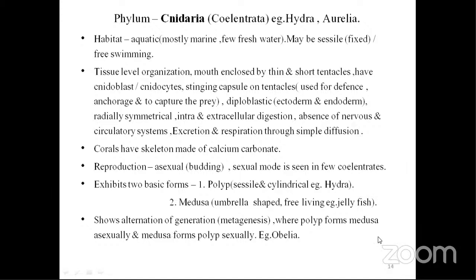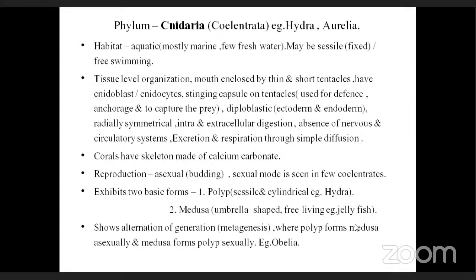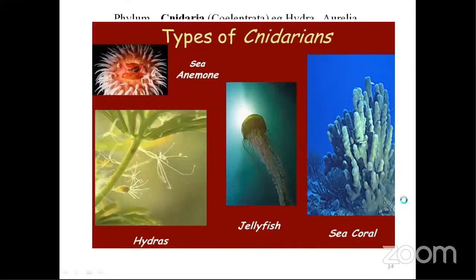Cnidaria show alternation of generation known as metagenesis — where polyp forms medusa asexually, and medusa forms polyp sexually. Similar to sporophytic and gametophytic alternation in plants (like fern or moss). The two basic forms are: sessile cylindrical (polyp — Hydra) and umbrella-shaped (medusa — Obelia or jellyfish). Examples of cnidarians include sea anemone, hydra, jellyfish, and sea corals containing calcium carbonate.